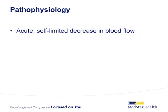The pathophysiology of ischemic colitis is more often an acute, self-limited decrease in blood flow rather than a specific vascular lesion or embolic event. Angiography, when abnormal, shows narrowing of the small vessels and tortuosity of the long colonic arteries.